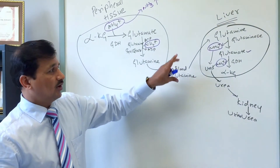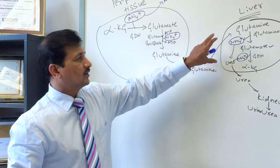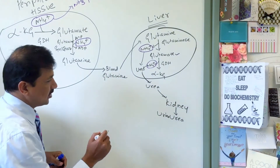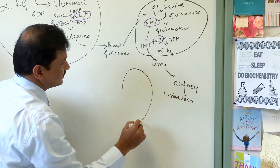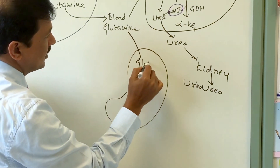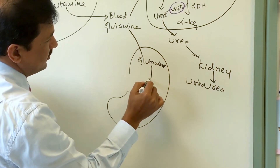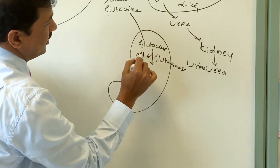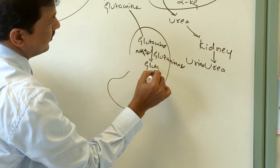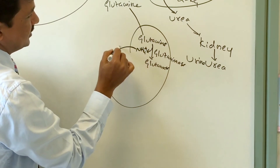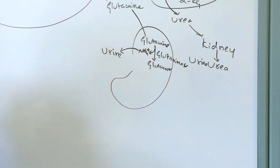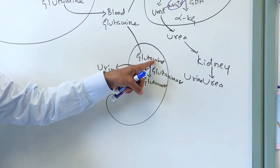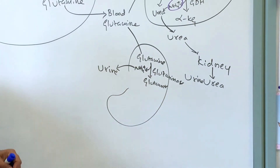Another fate of blood glutamine is uptake by the kidney. In the kidney, the same glutaminase enzyme breaks down glutamine into glutamate and releases ammonium ion, which is secreted directly into the urine. Any ammonium ion found in the urine comes from glutamine via the glutaminase reaction.